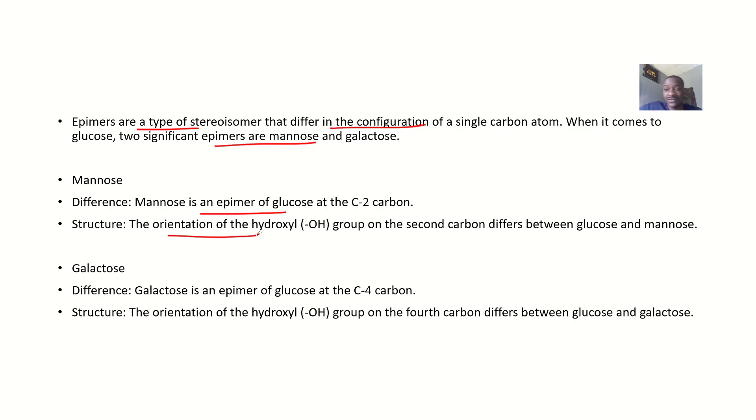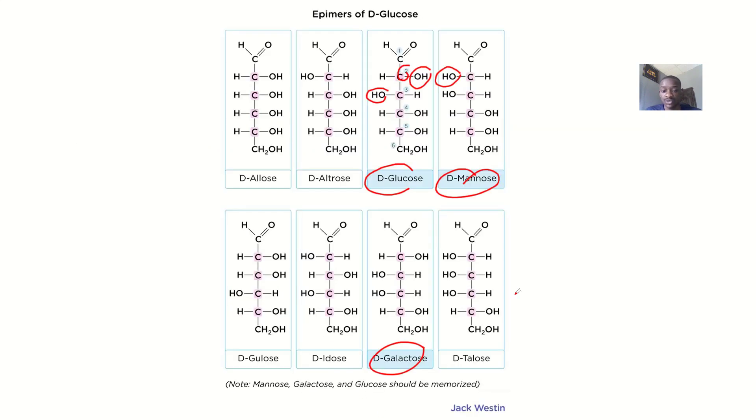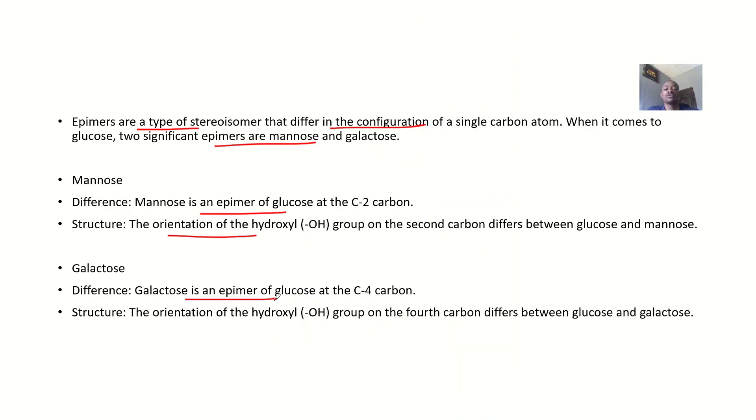Galactose is an epimer of glucose at carbon four. This is galactose. Let's spot the carbon four. This is carbon four. For this one, the OH is on the right, while for galactose, the OH is on the left. There's an orientation of the hydroxy group on the fourth carbon that differs between glucose and galactose.